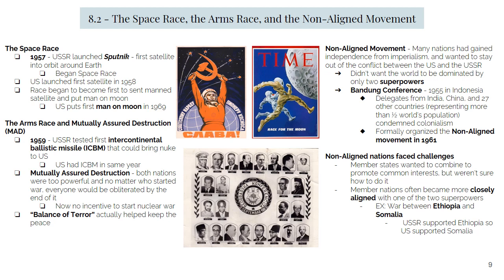Those non-aligned countries often had a hard time really remaining non-aligned. When one country did turn to the Soviets or the USA for help, its neighbors often quickly received aid from the opposite side, further expanding the battlefields of the war. For example, when Ethiopia and Somalia had a war, the Soviet Union supported Ethiopia, and so the US supported Somalia in that conflict. It kind of played out this way across the world in all these proxy conflicts.